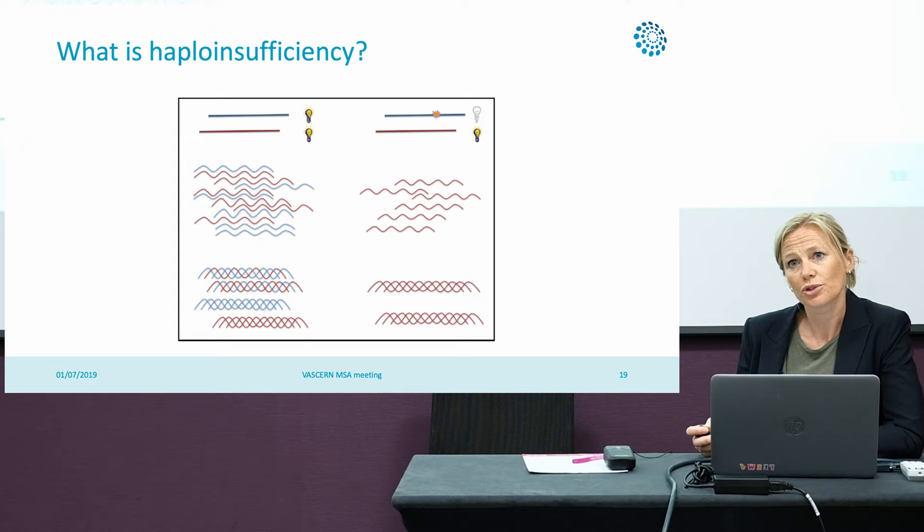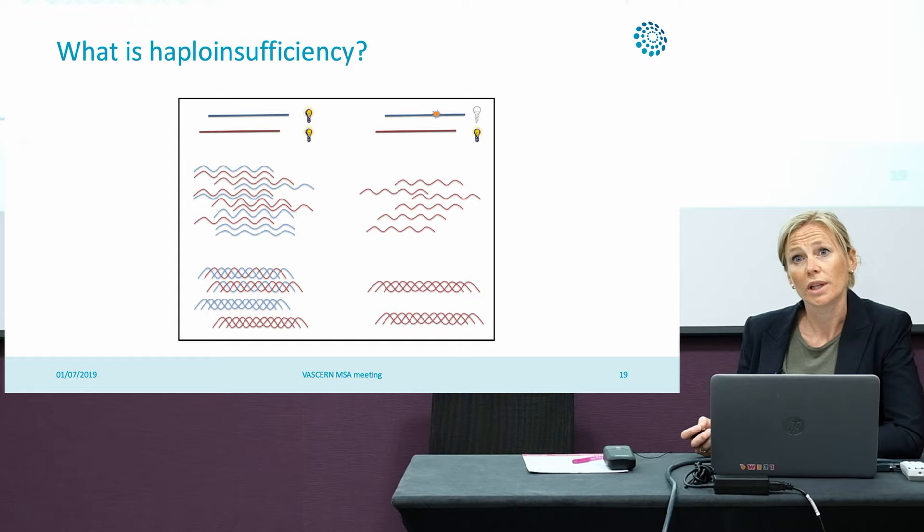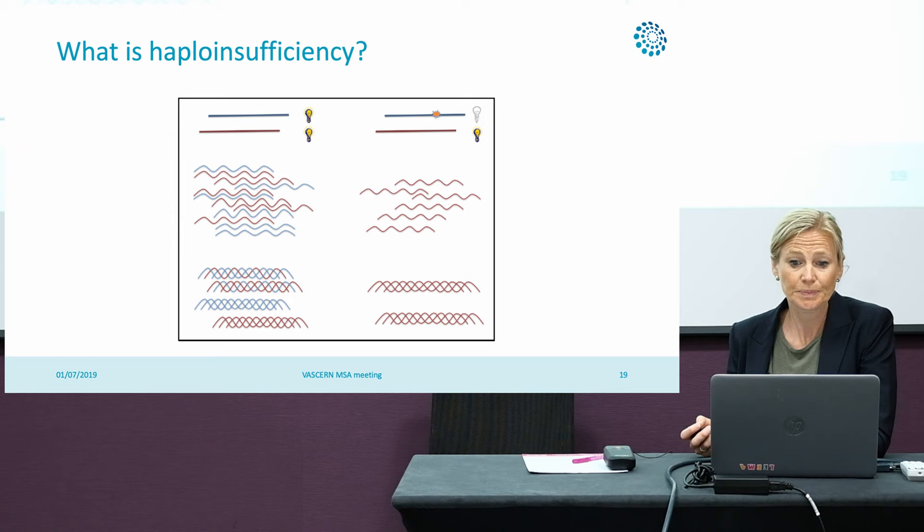So what is haploinsufficiency? If there is a null mutation or partial deletion of the gene, there is aberrant transcription and nonsense-mediated decay. As a result, only half of the protein is formed. That is what we call haploinsufficiency.